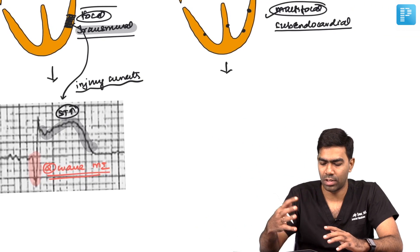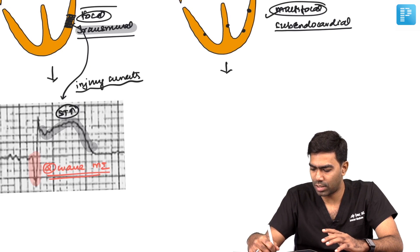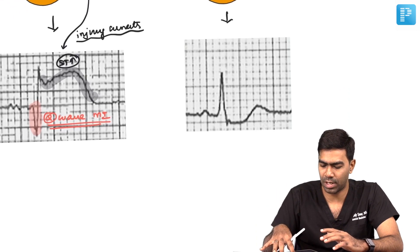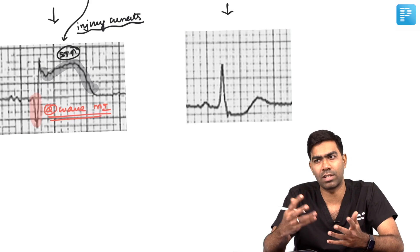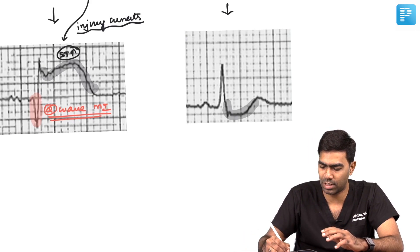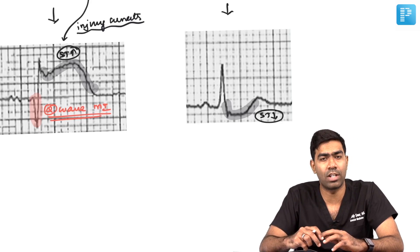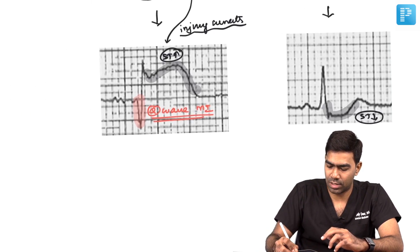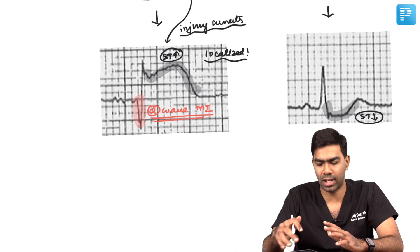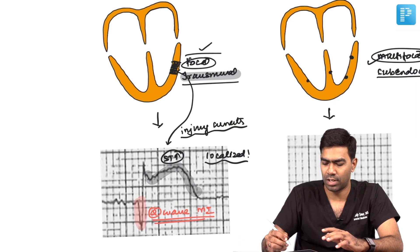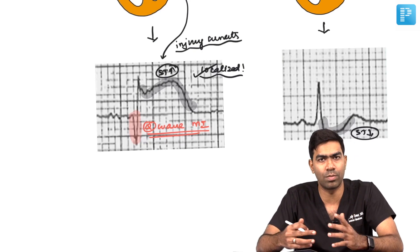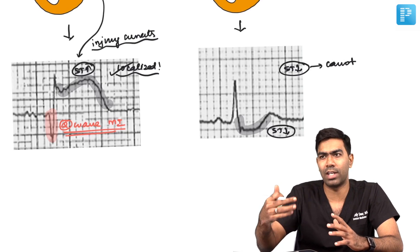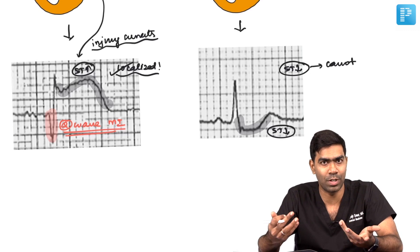In NSTACS, you typically get ST segment depression or T wave inversion. ST segment depression with upright T wave is the most common finding. A down-sloping or horizontal ST depression is particularly significant. Importantly, ST elevations in STACS can be localized to a vessel territory, but ST depressions and T wave inversions in NSTACS cannot be localized — for example, ST depression in leads II, III, aVF does not mean inferior NSTACS.